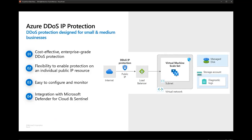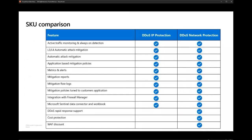This SKU is designed for small and medium businesses. It's cost-effective and provides enterprise-grade protection — the same amount of protection as network protection. It offers more flexibility and is very easy to configure and monitor: you enable it on a public IP and you're protected, with no additional configuration needed. It also has the same integration with Microsoft Defender for Cloud and Sentinel.